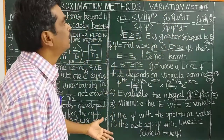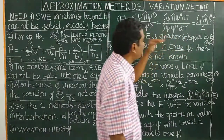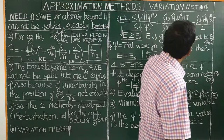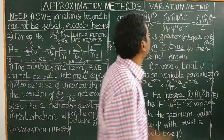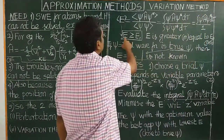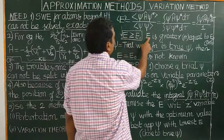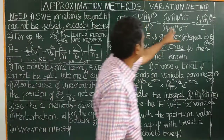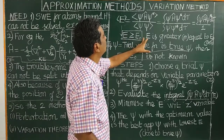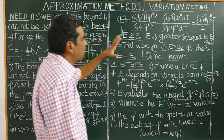Since the wave function is normalized, according to the normalization condition, the denominator integral is equal to 1. Therefore, the average value of energy equals this integral. According to the variation theorem, the average energy value obtained by this method is always greater than or equal to the ground state energy of the multi-electron atom — that is, the energy is always an upper bound.